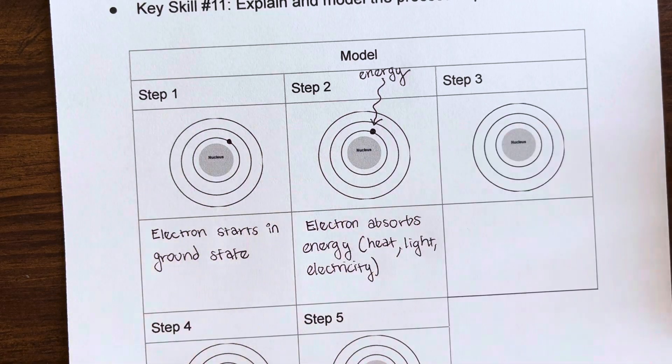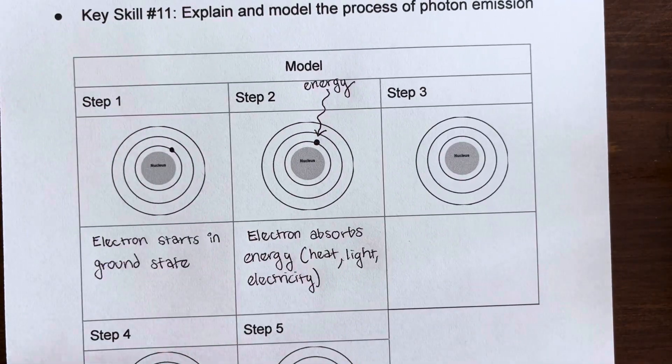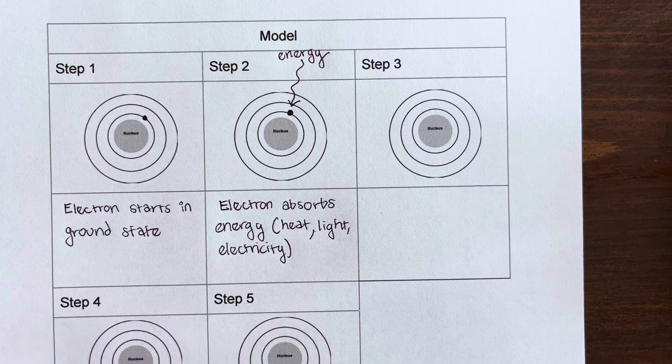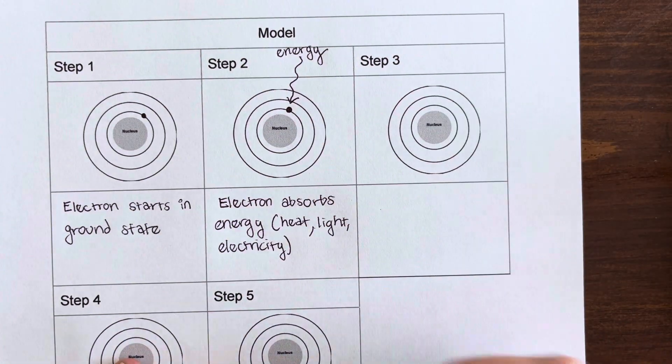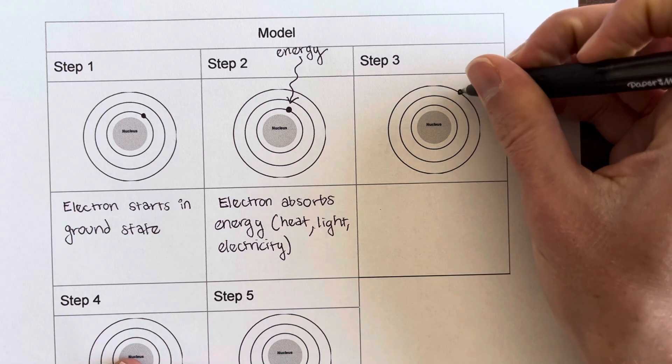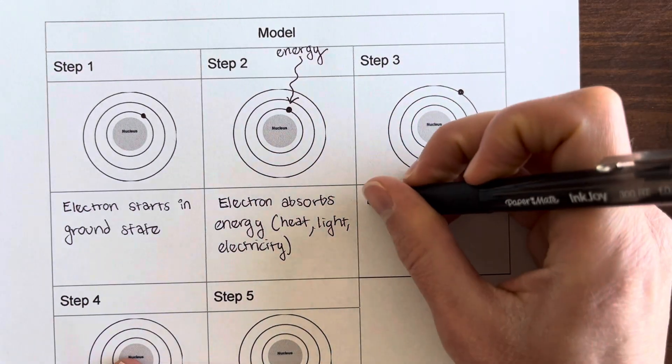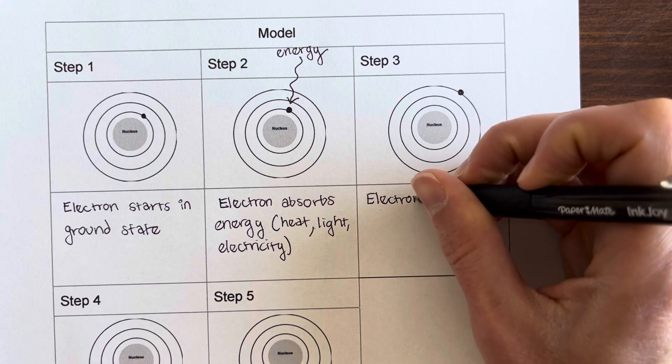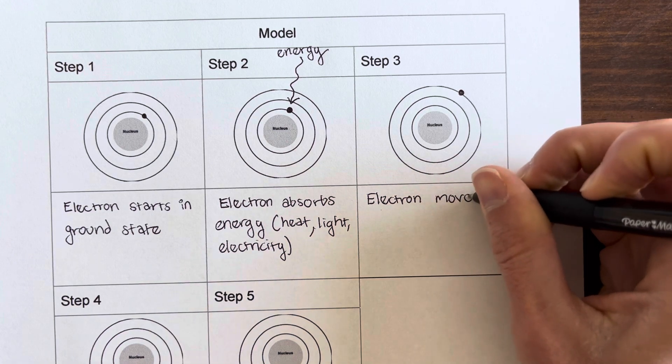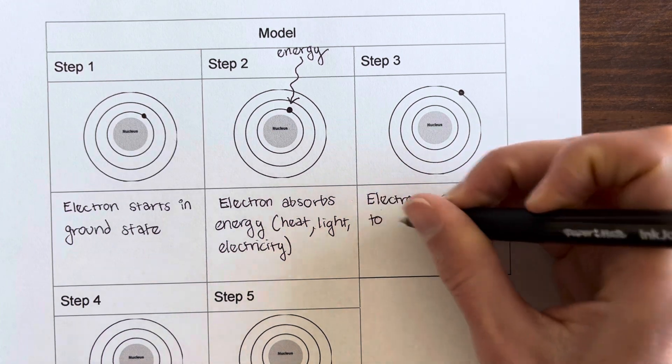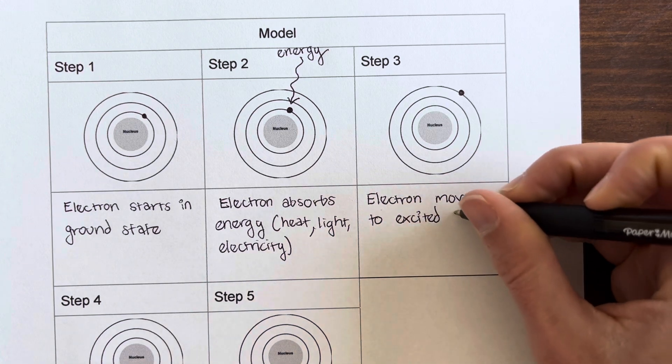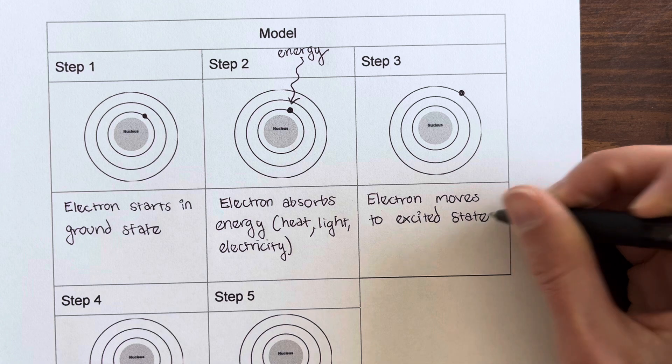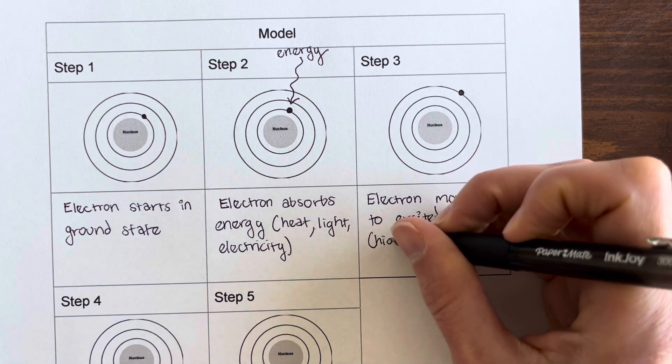So once that electron has this energy, that is going to cause it to jump to an excited state. So it could jump to this one or this one depending on the amount of energy that it has. Let's just draw it up here. So electron moves to excited state, which is a higher energy state.